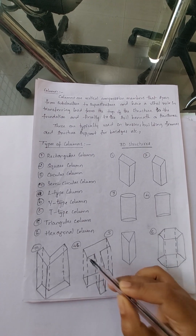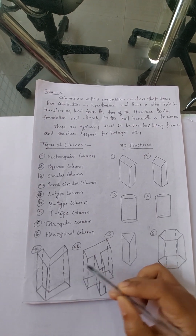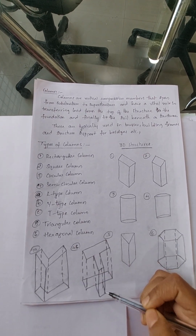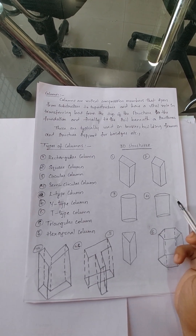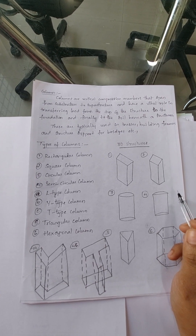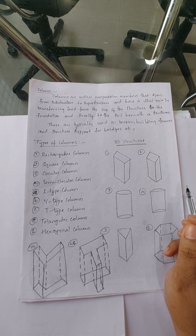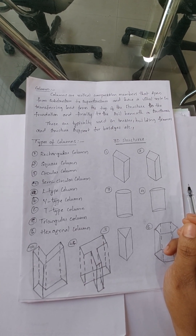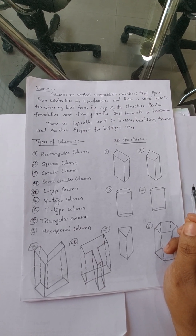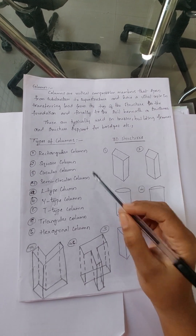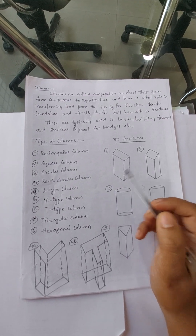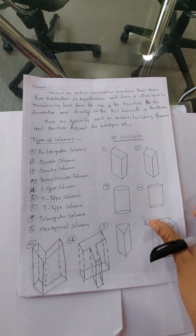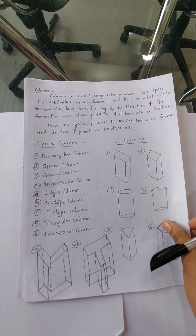You can see the 3D view of all these types of columns: rectangular, square, circular, semicircular, triangular, hexagonal, L-type, and T-type. These were the 3D view structures. Now we will learn how to take quantities of these different types of columns, so let's start our quantity takeoff.